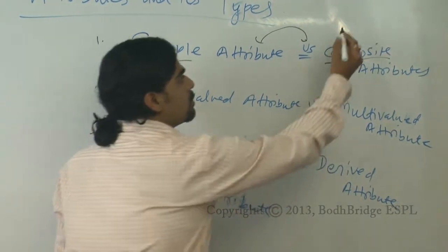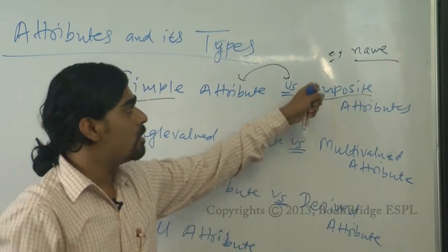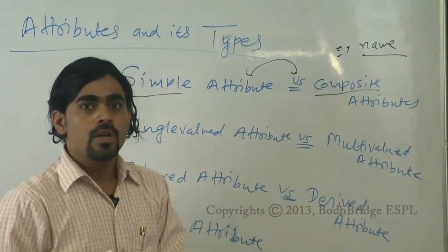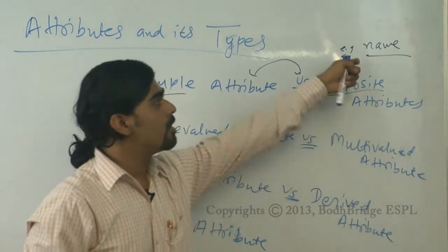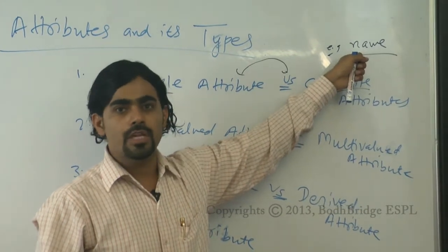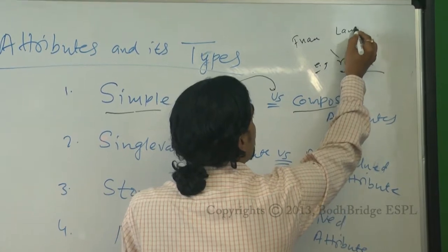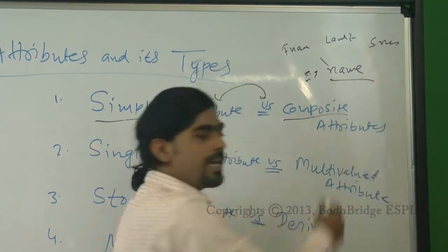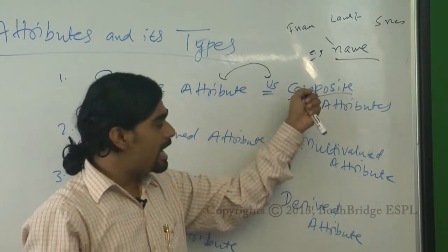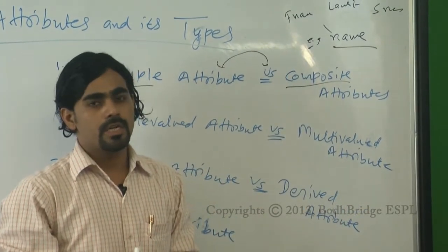For example, take the attribute 'name.' Decompose means you can break that attribute into more than one field. So 'name' can be divided into first name, last name, and surname. If any attribute can be decomposed this way, it is called a composite attribute.